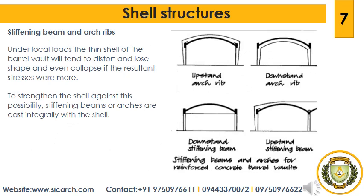Stiffening beams: under local loads, the thin shells of the barrel vault will tend to distort, lose shape, and even collapse if the resultant stresses are too great. To strengthen the shell against this possibility, stiffening beams or arches are cast integrally within the shell. The common practice is to provide a stiffening member between the columns supporting the shell. A downstand stiffening RCC beam is most efficient because of its depth, but this interrupts the line of soffit of the vault. For this reason, an upstand stiffening beam is used, though its disadvantage is that it breaks the line of the roof and requires protection against the weather.